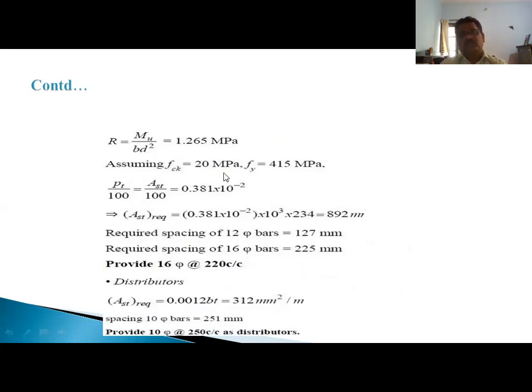Now Mu/bd² is 1.265 MPa. We're assuming fck is 20 N/mm² and fy is 415 MPa. Area of steel, pt/100 percent of steel is 0.381 × 10⁻². Therefore steel required is pt multiplied by length per meter, 1000 mm times effective depth 234 mm, which is 892 mm². If providing 12 mm dia bars, spacing is 127 mm. If providing 16 mm dia bars, spacing is 225 mm center to center. Hence we will provide 16 mm dia at 220 mm center to center. This is the main reinforcement.